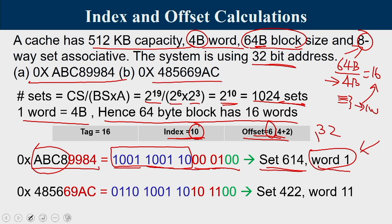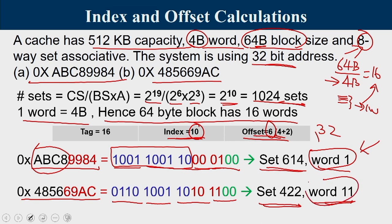For address 0x485669AC: expanding the last 16 bits — '6'=0110, '9'=1001, 'A'=1010, 'C'=1100. The 10-bit index portion gives set number 422, and the word number is 11. So search is restricted to set 422; perform tag comparison, and on a cache hit, transfer word number 11 to the processor.